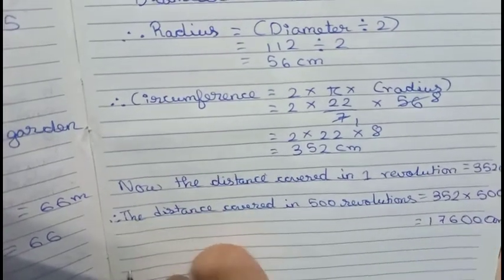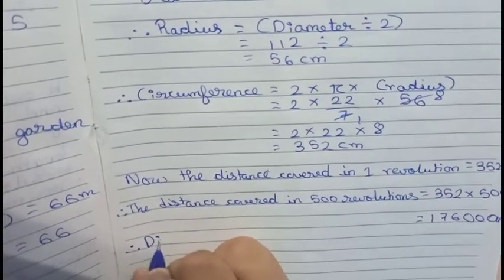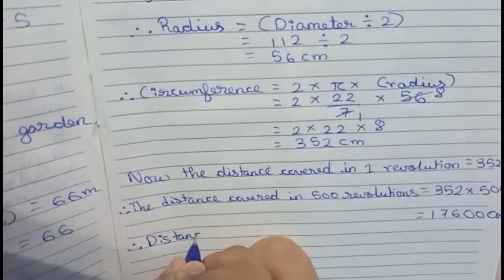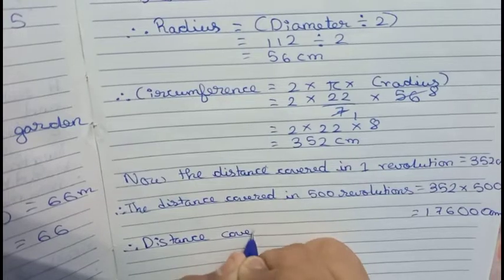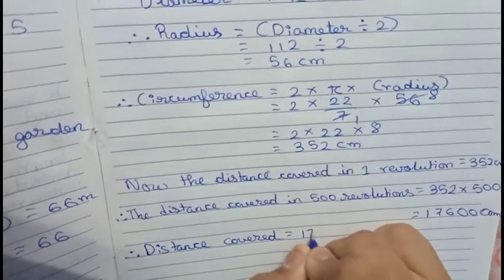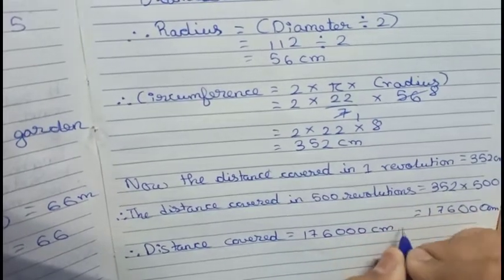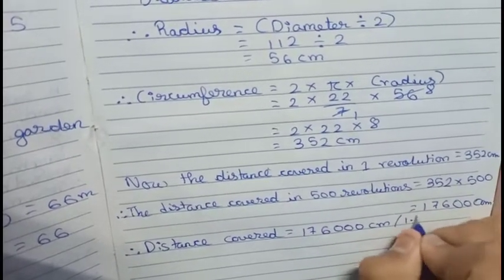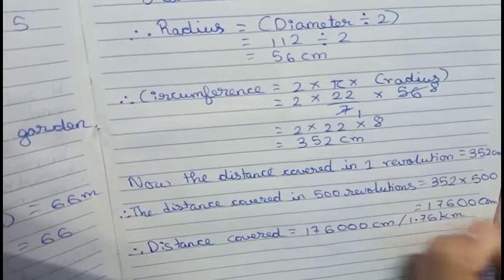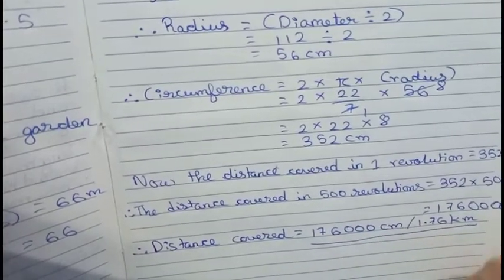Now we write it. Therefore distance covered equals to 176,000 centimeters, or you can write it as 1.76 kilometers. So this is our final answer.